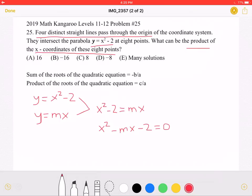As I have written here, the sum of the roots of a quadratic equation is negative b over a, and the product of the roots of a quadratic equation is c over a. In this case, we're looking for the product of the roots. So that would be c over a, which would be negative 2 over 1.